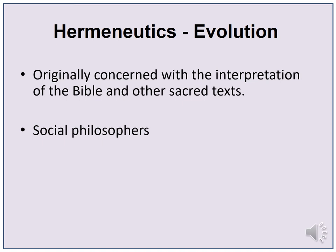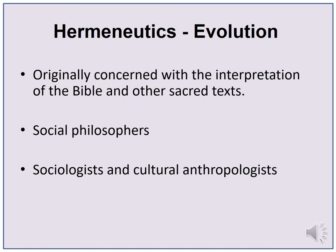Social philosophers like Habermas looked at how the interpretive techniques of hermeneutics could be applied in the social sciences. Hermeneutics philosophy has also been used by sociologists and cultural anthropologists. In this case, culture is treated like a text that needs to be interpreted and understood. Qualitative researchers seek to discover the meaning of actions or statements in their social and organizational context.